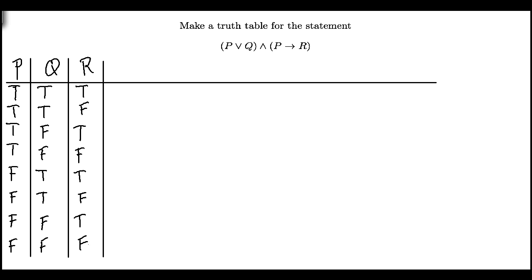Now I need to make columns for the various parts of my statement, and I'll build the statement up in parts. So first I will do P or Q. Notice I also have a part P implies R, so I'll do a column for that. And then finally I'll have my entire statement: P or Q and P implies R.